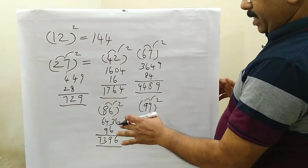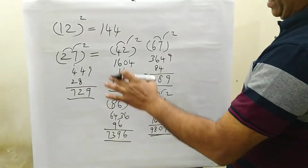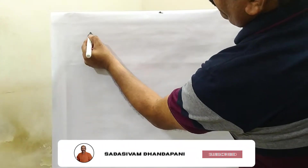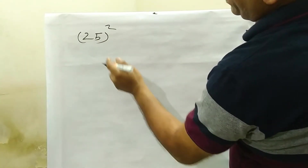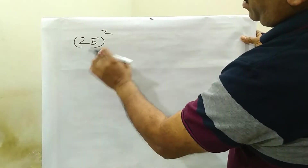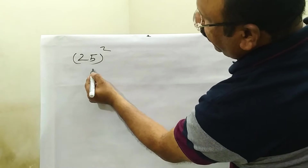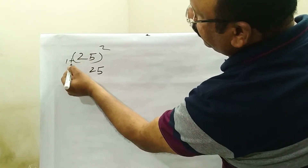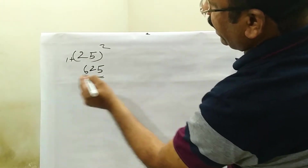Now we go to 2-digit squares. Next, we go to numbers ending in 5 — 5, 5 gives 25. In the second part, we go to 3, 2, 6. That's the answer.